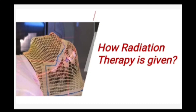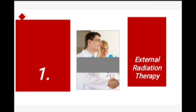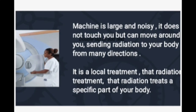Radiation therapy is given in two ways: number one, external radiation therapy; and number two, internal radiation therapy. External radiation therapy uses a machine that is large in size and noisy. It does not touch you but can move around you, sending radiation to your body from many directions. It is a local treatment that targets a specific part of your body.